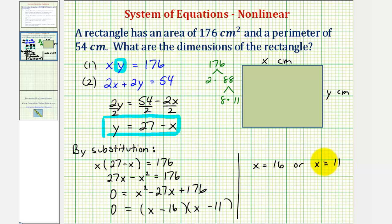It may seem strange to have two possible values for x, but if x is 16, then y equals 27 minus 16, or 11. If x is 11, then y equals 27 minus 11, or 16. Either way, we have the same dimensions for the rectangle.